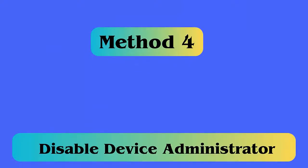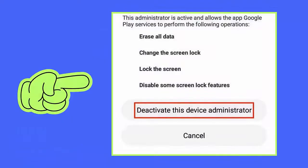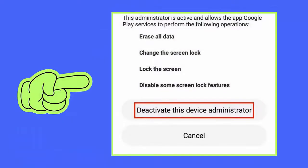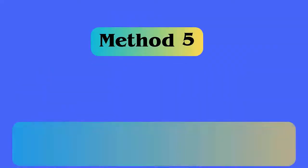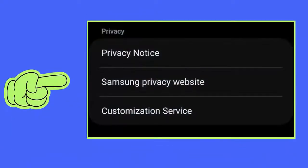Method 4: Disable device administrator. Follow the steps: First, launch Settings and go to Security. Now click on Device Administrators. Here, uncheck the box beside the harmful app. Under the dialog window, click on Deactivate This Device Administrator.